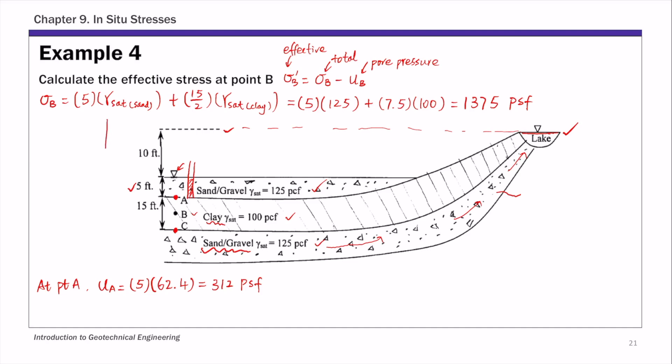If you put a standpipe at point C to measure the pore pressure at point C, that water is going to rise all the way to the top of the surface of that lake. This whole distance is the height of the water column. Think of this as a big natural standpipe. The surface of that lake gives you basically the height of the water column. That is 10 plus 5 plus 15, so that's 30 feet. You have 30 feet of water, so UC is 30 times 62.4, and that's 1872 PSF.